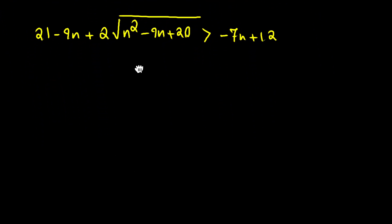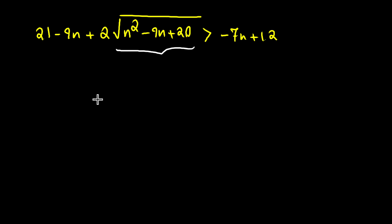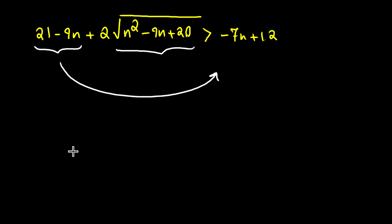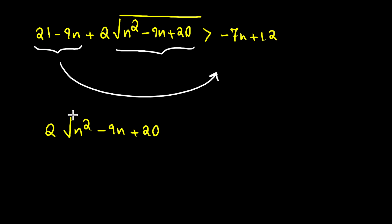Next, let's go ahead and isolate this square root. We need to move this expression to the right hand side, so we will have 2 times the square root of n squared minus 9n plus 20 is greater than 2n minus 9.